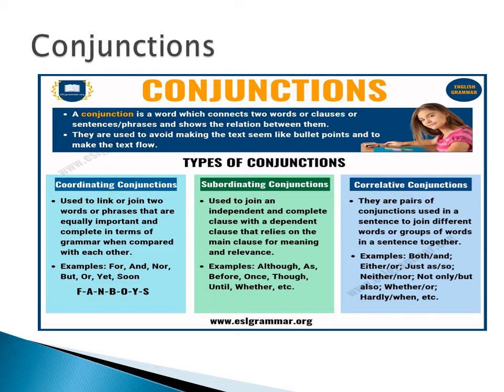What do we mean when we say coordinating conjunctions? They are used to link or join two words or phrases that are equally important and complete in terms of grammar when compared with each other. Examples of this: for, and, nor, but, or, yet, and so. Or simply, they are the FANBOYS.